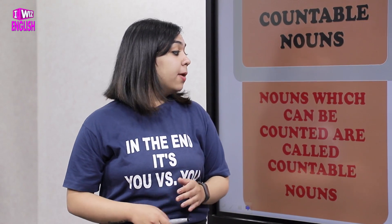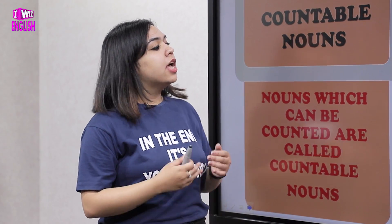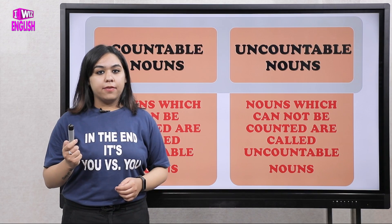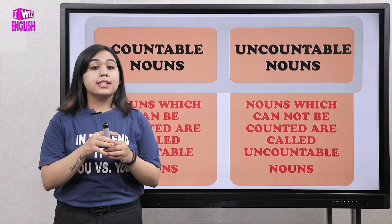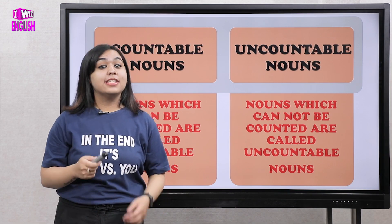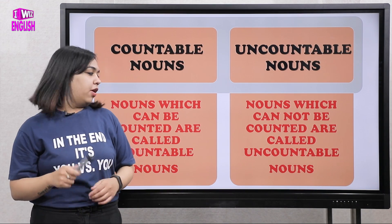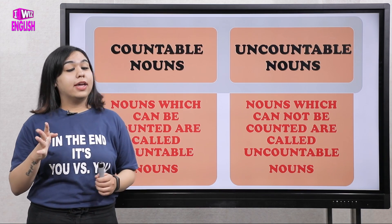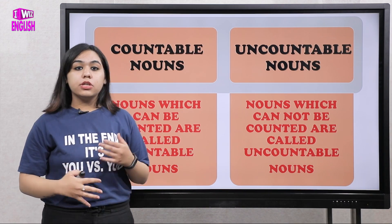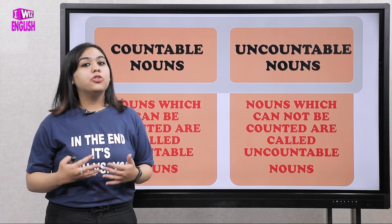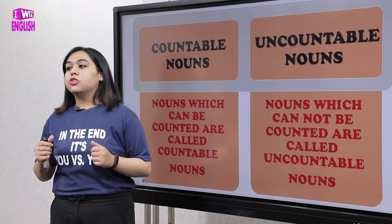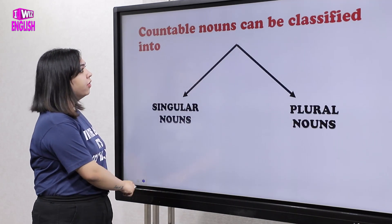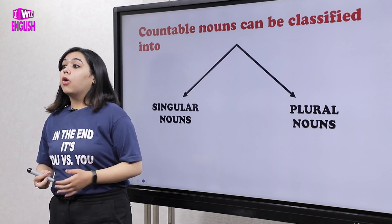Nouns which can be counted are called countable nouns; nouns which cannot be counted are called uncountable nouns. For example, this pen — I can count one pen, two pens, three pens, so pen is a countable noun. Whereas water: can I say one water, two water? No. Happiness — can I say one happy, two happy? No. Nouns we cannot count are termed uncountable nouns.